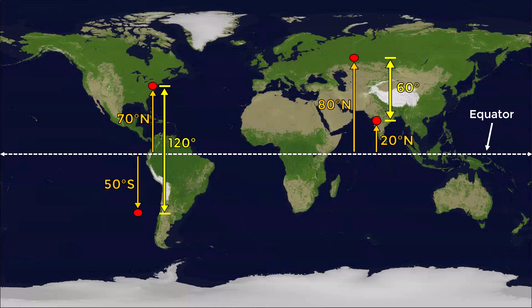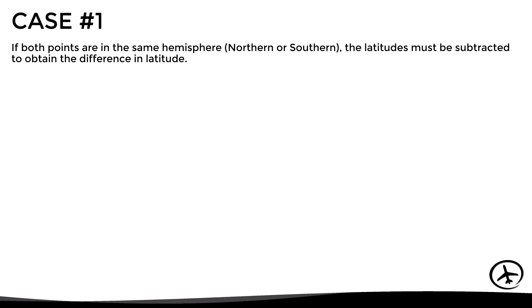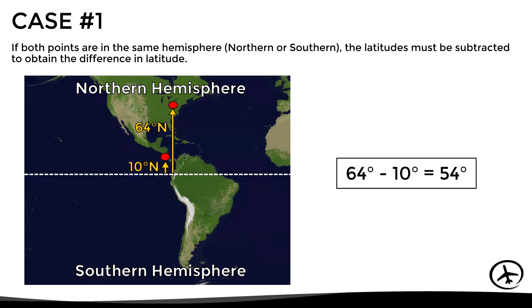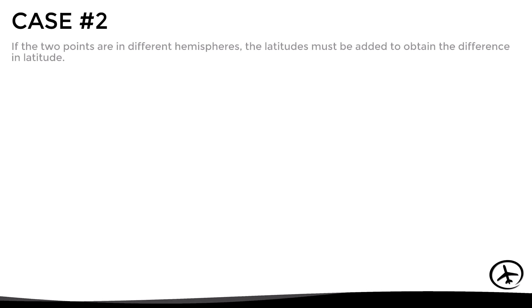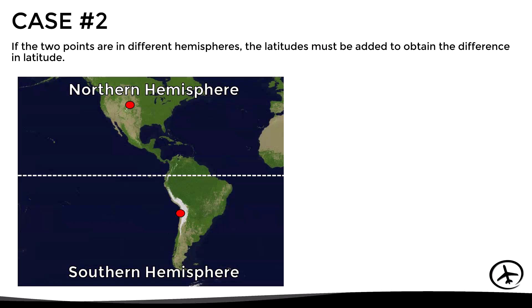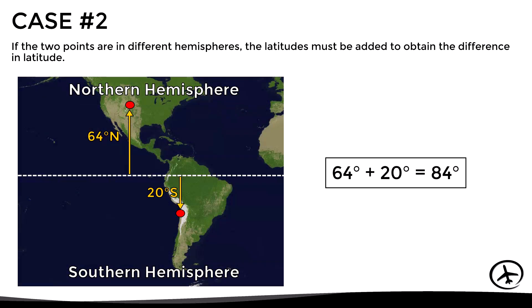To calculate the difference in latitude, the latitudes must be added or subtracted depending on the case. If both points are in the same hemisphere, then the latitudes must be subtracted to obtain the difference in latitude. For example, if both points are in the northern hemisphere, we subtract the latitudes and obtain a difference in latitude of 54 degrees. On the other hand, if the two points are in different hemispheres, then the latitudes must be added. For example, with one point in the northern hemisphere and the other in the southern hemisphere, we add the latitudes and obtain a difference in latitude of 84 degrees.